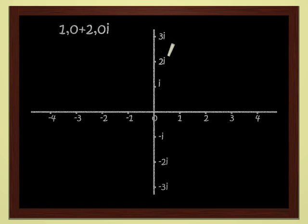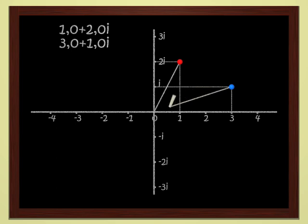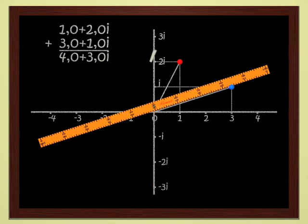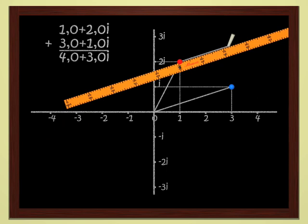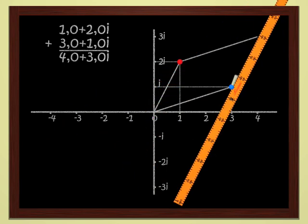These numbers can be added, just like usual numbers. Look at the red point, which is the point 1 plus 2i. Let's add 3 plus i, which is the blue point. You add them just as school children do. That gives us 4 plus 3i. Geometrically, this is just addition of vectors. You see that it's no problem to add complex numbers.